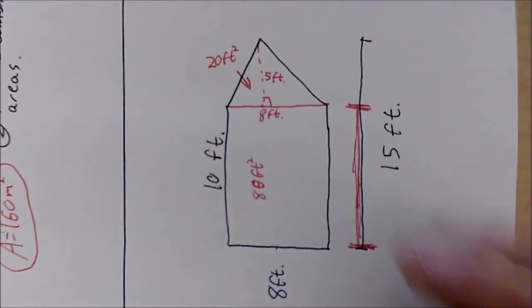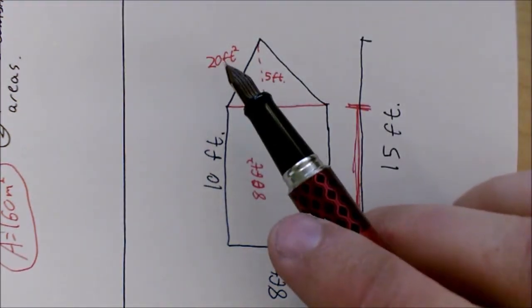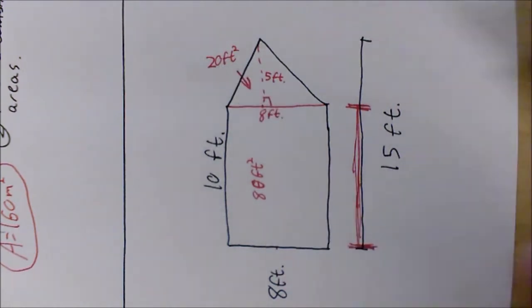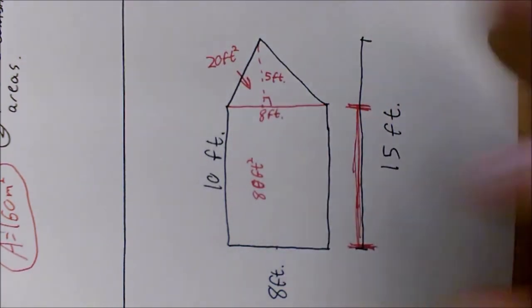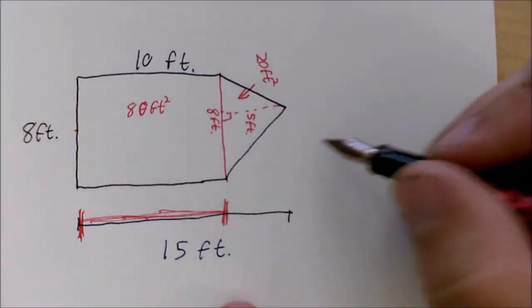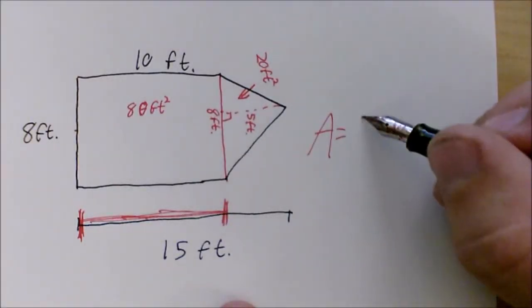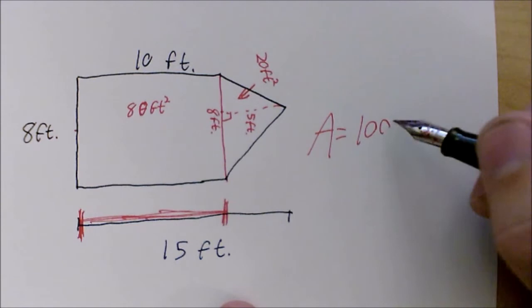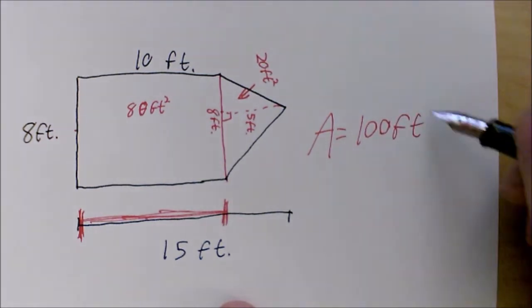Finally, we have to combine the area of our triangle and the area of our rectangle. 20 feet squared plus 80 feet squared gives us a final answer of 100 feet squared.